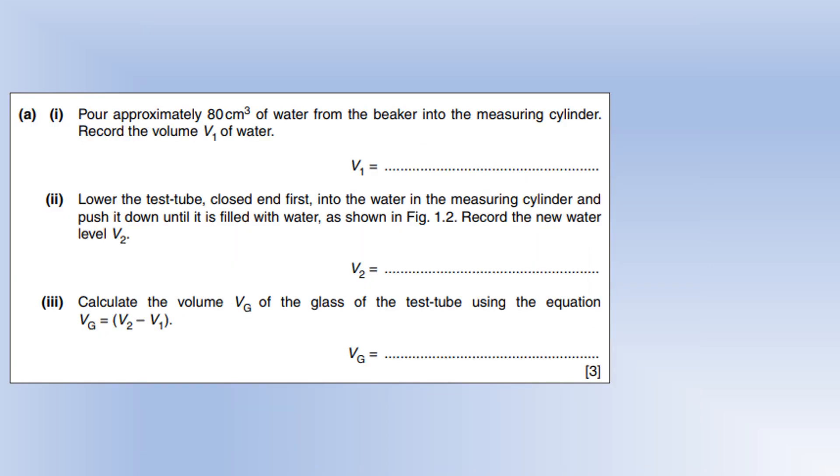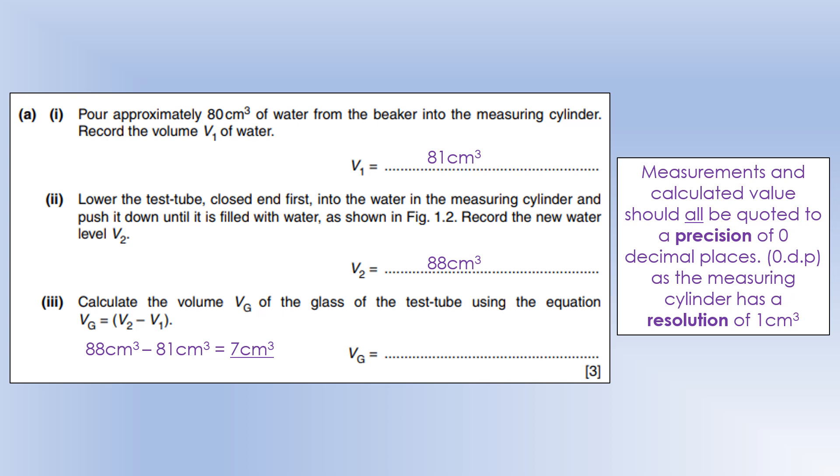We've got 80 centimeters cubed of water in the measuring cylinder, though my measuring cylinder ended up with 81 centimeters cubed - as long as it's close to 80 that's fine. Once I put the test tube in which was filled with water, it ended up being 88, so clearly the volume of glass is 7 centimeters cubed. A measuring cylinder's resolution is 1 millimeter, so all measurements can be done to the nearest milliliter or centimeter cubed.